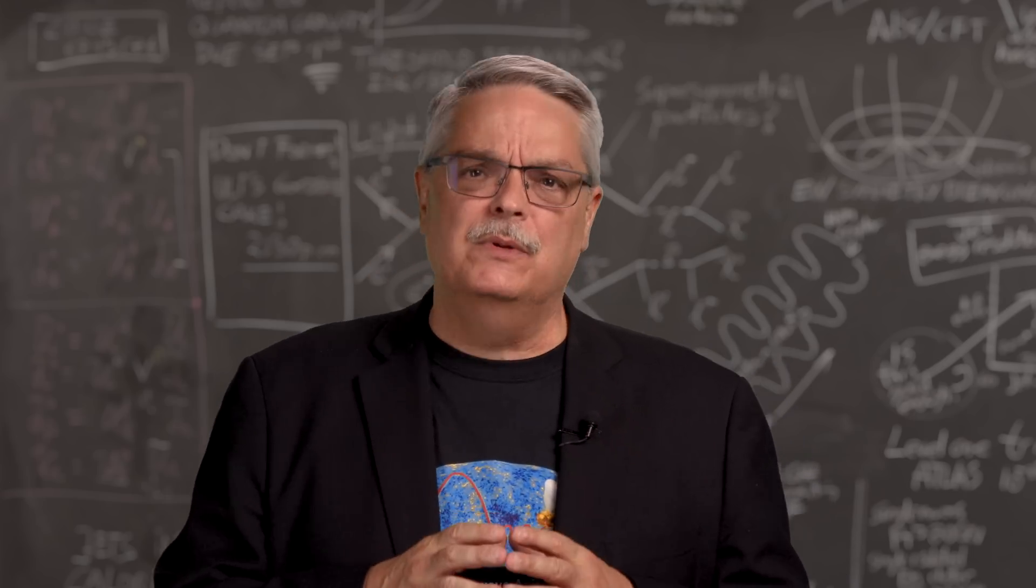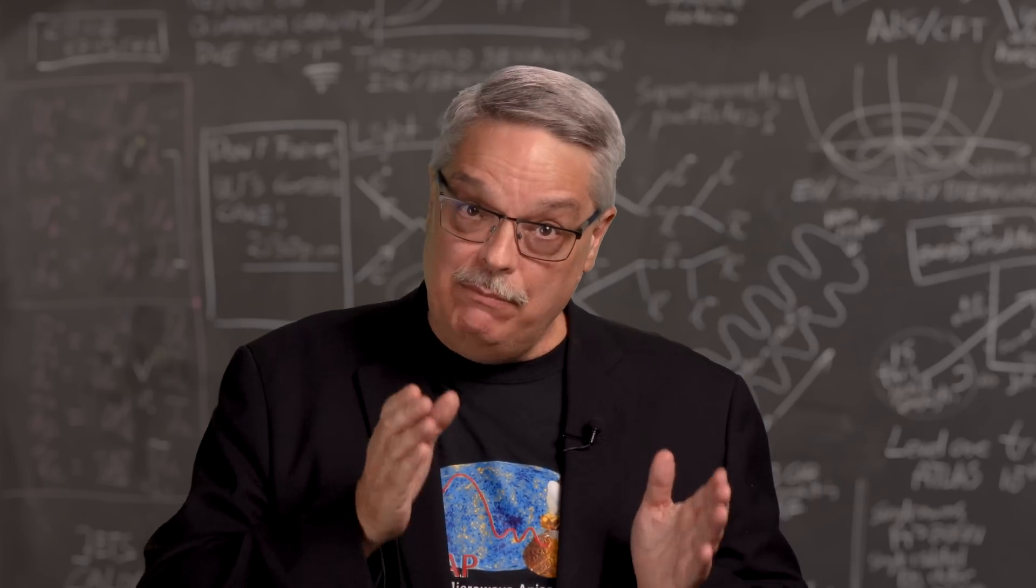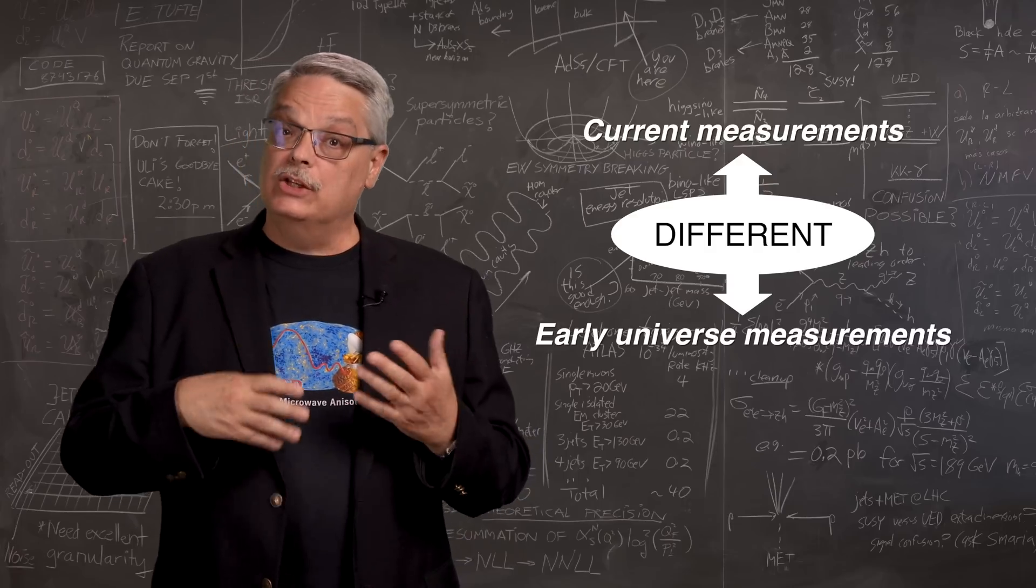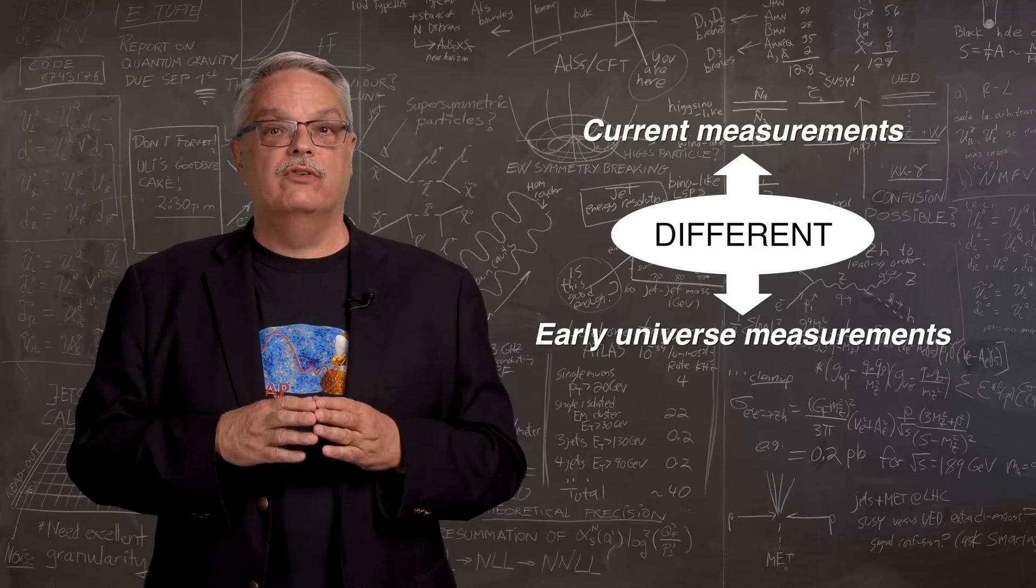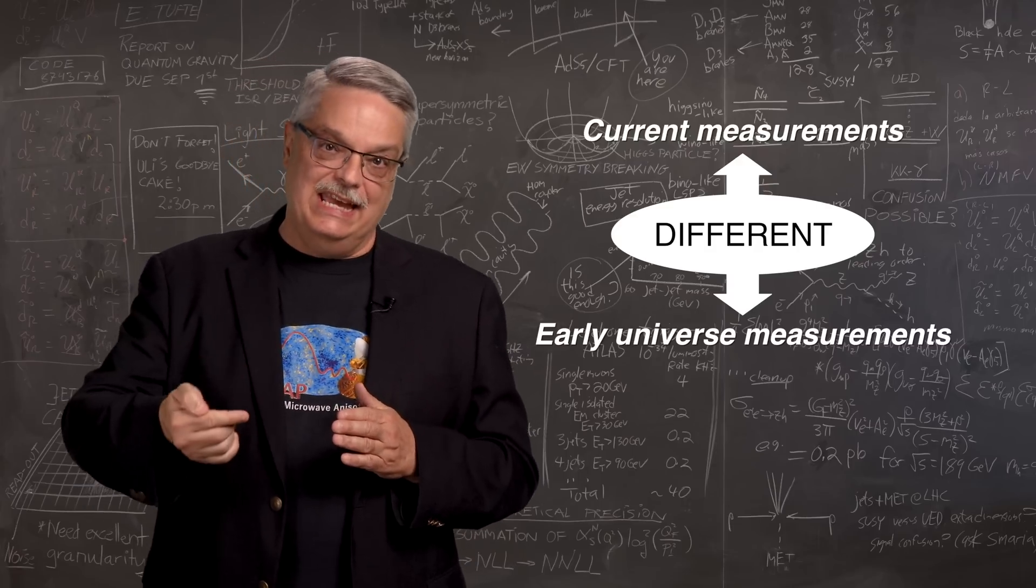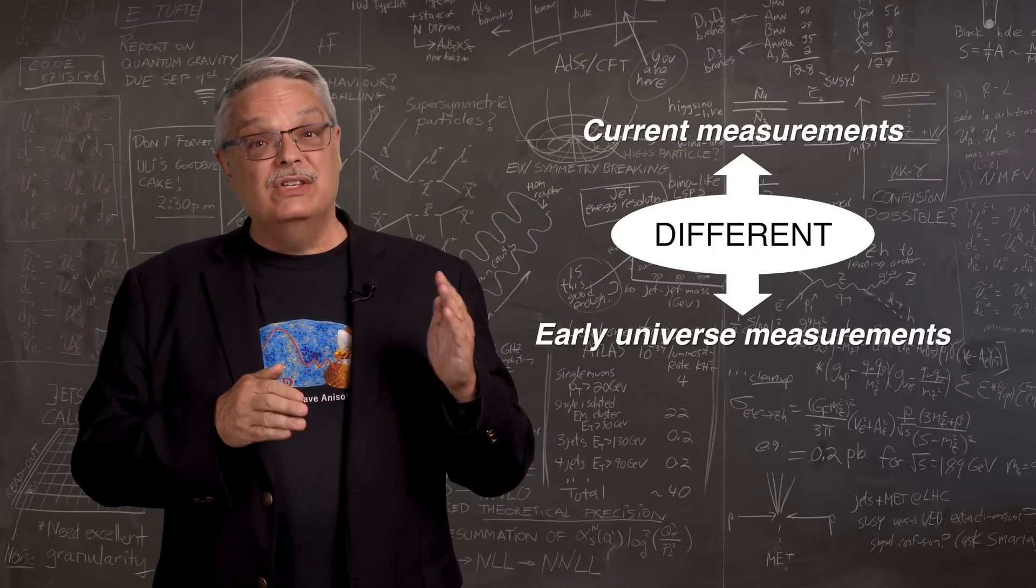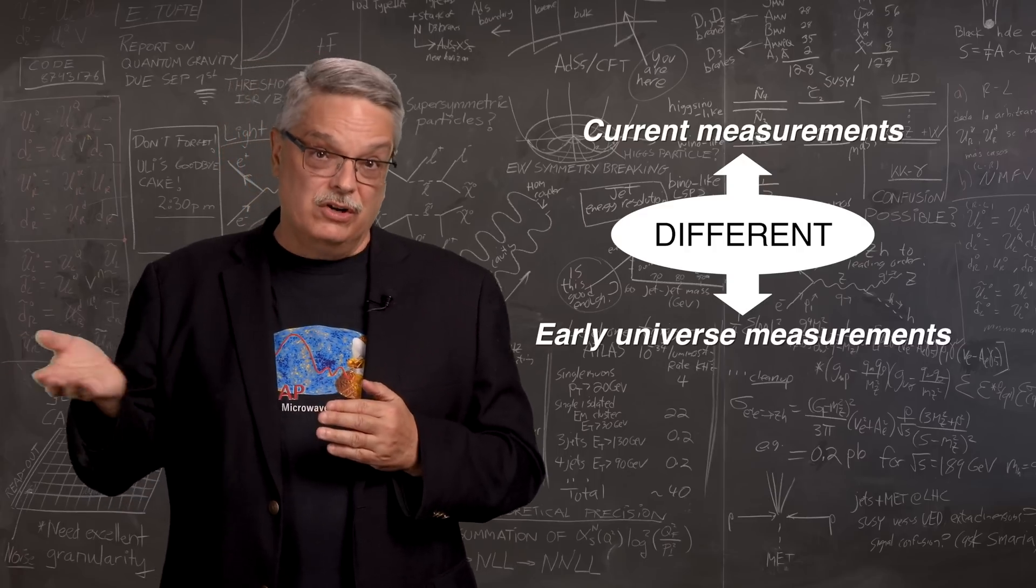But what if the discrepancy is real? So what if these two ways of measuring the same thing are actually different? What would that mean? Well, at its core, it means that when you take the conditions of the early universe and project them to today, you get the wrong answer. So that means that there is a phenomenon that we don't know about that is overlooked in our current calculations.